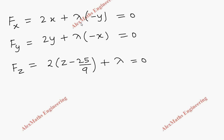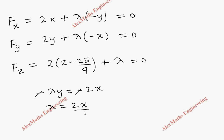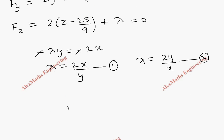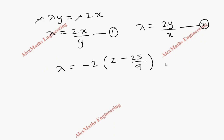From the first equation, −λy = −2x, so λ = 2x/y. From the second equation, λ = 2y/x. From the third equation, taking the term to the other side, λ = −2(z−25/9). Since all three expressions equal λ, we will equate them.